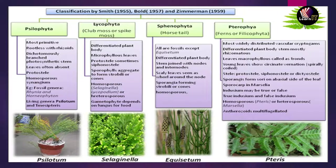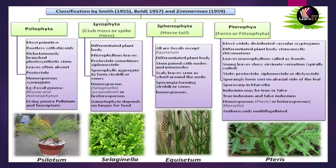We'll start with Psilopsida. These are the most primitive type of plants. They contain photosynthetic stems and the leaves are often absent. Examples include Rhynia and Horneophyton — these two names are important from the syllabus perspective.